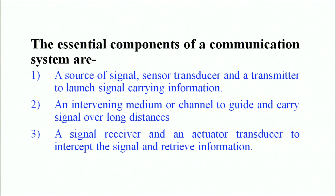For example, right now sitting in front of you, I am producing a signal which is received by the sensor transducer and is transmitted via the transmitter. I am communicating with you via a wireless mode of communication. These signals are transmitted via space and then received at your end by the signal receiver and the actuator transducer, which intercepts the signal and retrieves the information for you. So my audio and video signal manages to reach you and the communication becomes possible.